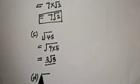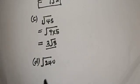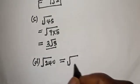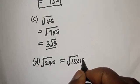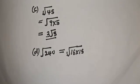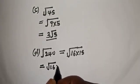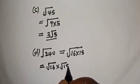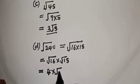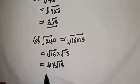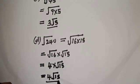Question (d) is square root of 240. This equals square root of 16 multiplied by 15, since 16 times 15 equals 240. This equals square root of 16 multiplied by square root of 15. Square root of 16 is 4, so the answer is 4 root 15.